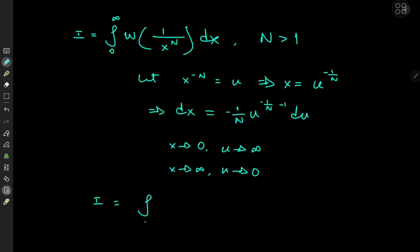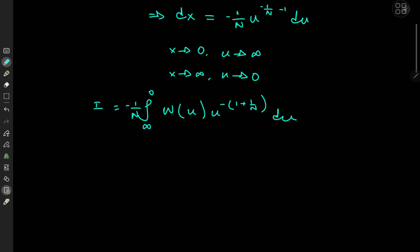So I is now defined as the integral from infinity to 0 of W(u), and the differential element transforms into negative 1 over n outside, with u to the minus 1 plus 1 over n du. We can get rid of the negative sign by flipping the limits of integration, giving us 1 over n times the integral from 0 to infinity of W(u) times u to the negative 1 plus 1 over n, du.